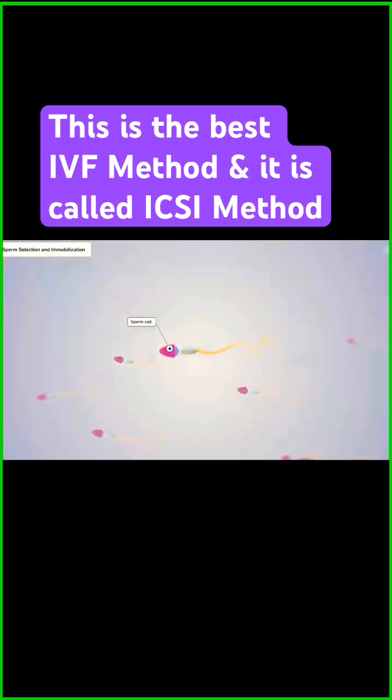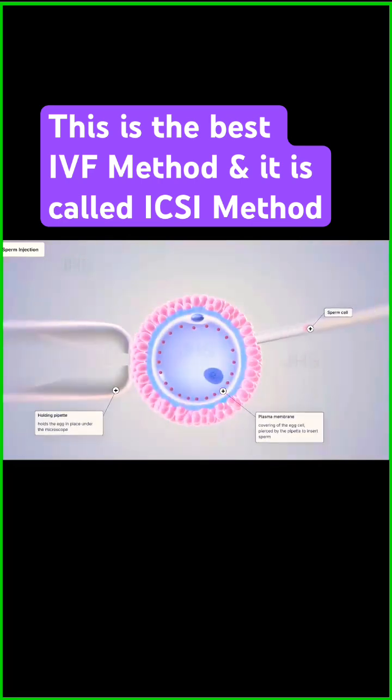Then, with the aid of a high-resolution microscope, a healthy sperm cell is carefully selected from the man's sample. That healthy sperm cell is carefully injected into the cytoplasm of a mature healthy egg to achieve fertilization.